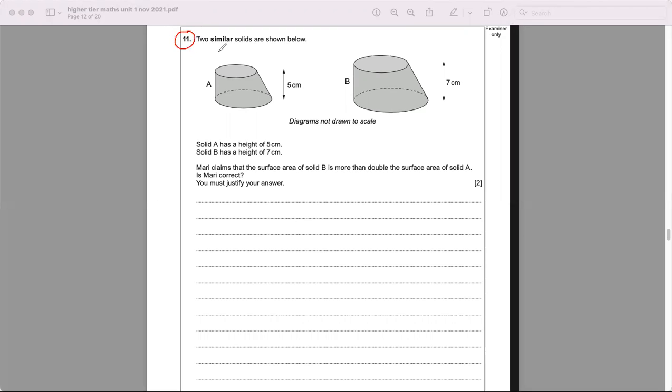Question 11. Two similar solids are shown below and you can see the word similar is in bold, so they're telling you this is an important word. There are two shapes there, so it's got to do with the topic similar shapes. This grade works from C to A depending what they're asking you in the question.